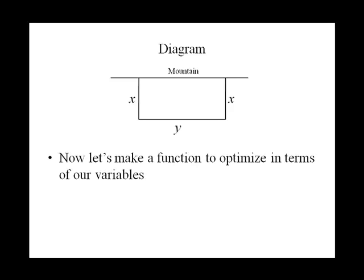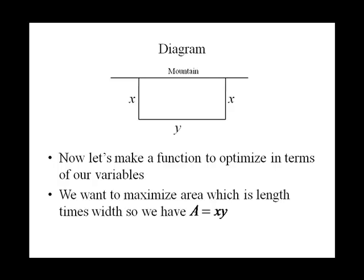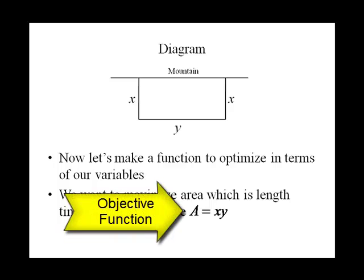Now we need to come up with a function that we're going to optimize in terms of our variables. Remember what it is we want to optimize. In this case we wanted to maximize area, so we need a function for area. Well area of a rectangle, in this case, is x times y. So A equals xy is our objective function.